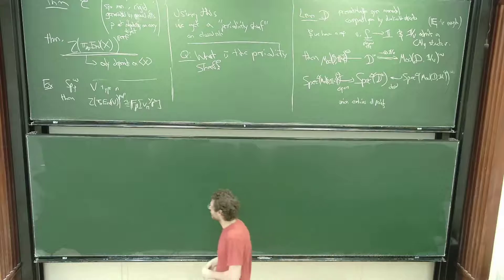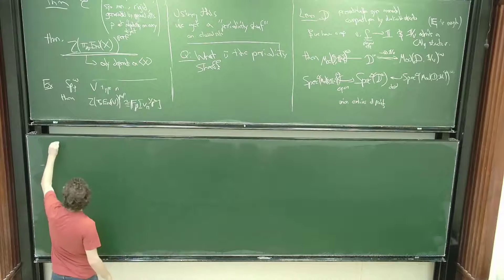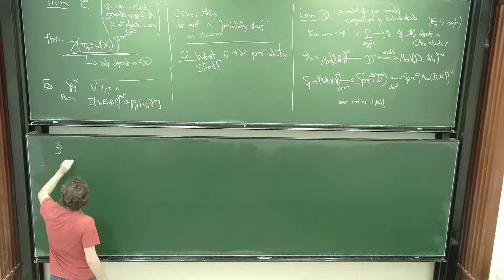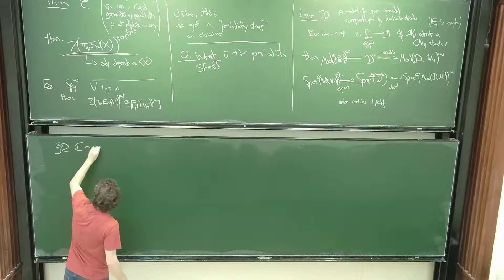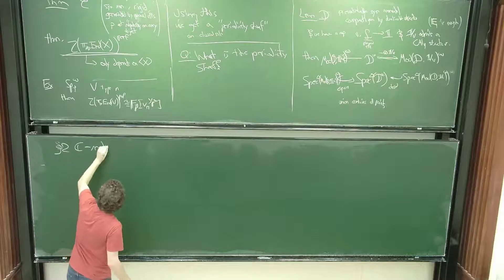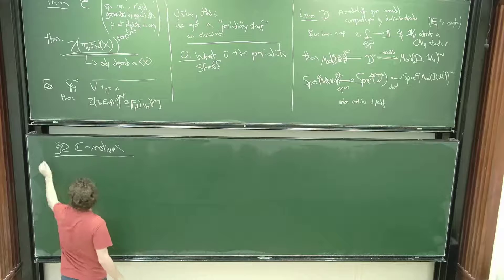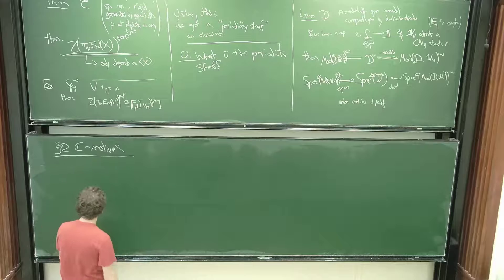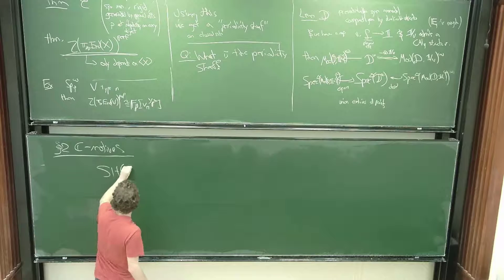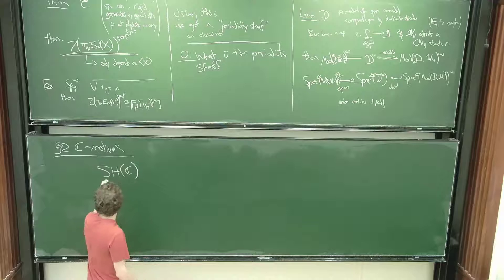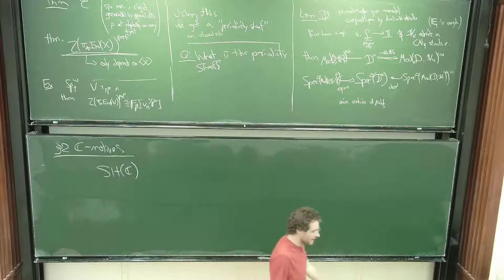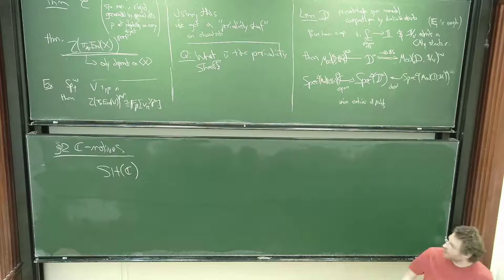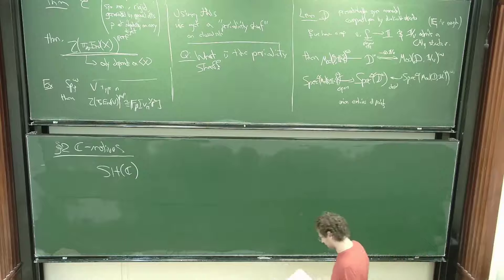C-motivic spectra finally enter the game. We're thinking about SH(C), the stable motivic homotopy category over C. That's a really complicated category.